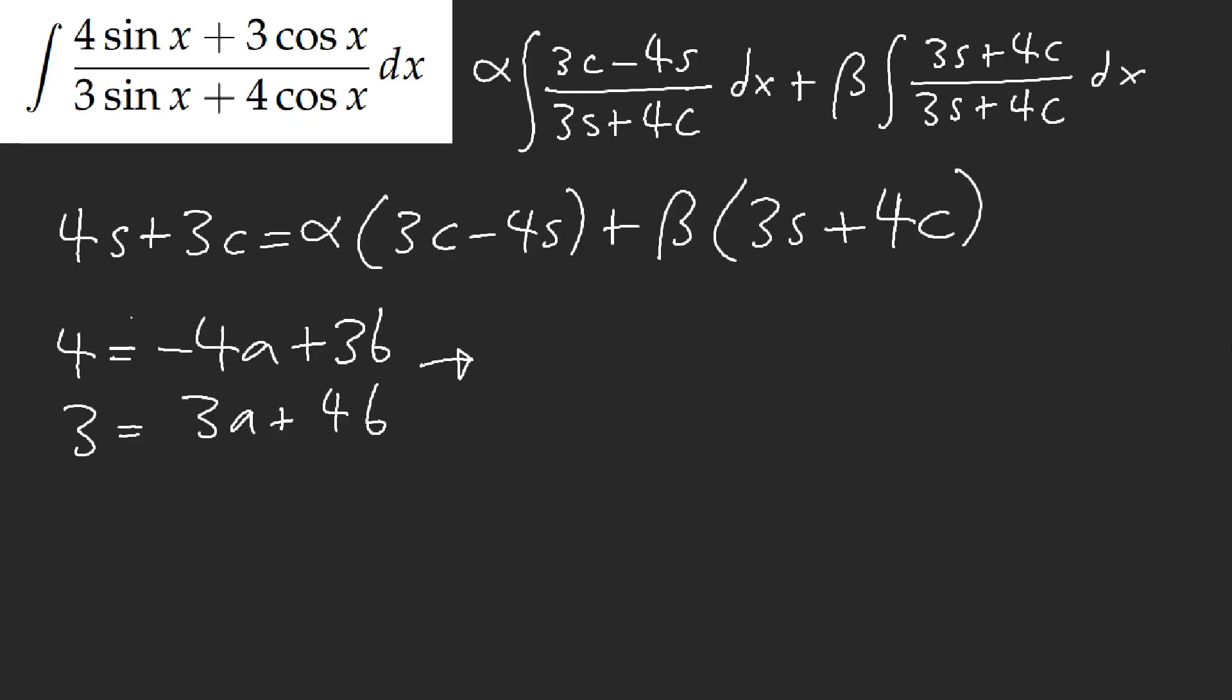So, if I multiply 3, 4 here, I'll get 12, negative 12a plus 9b, 12a and I get 16b. Okay, add these two together, we get 24 equals 16 plus 9, that's 25b.